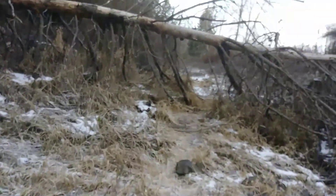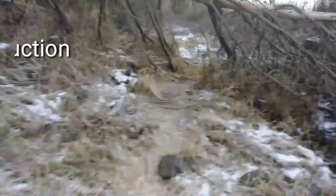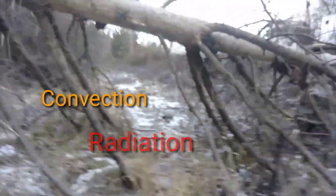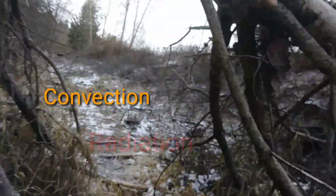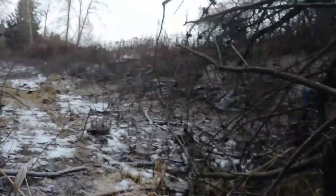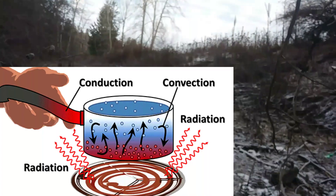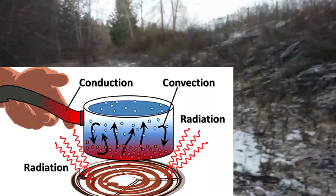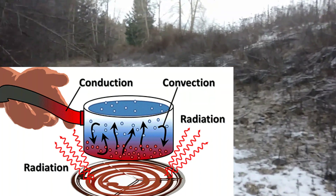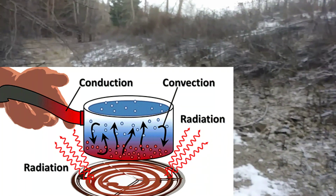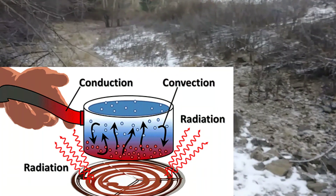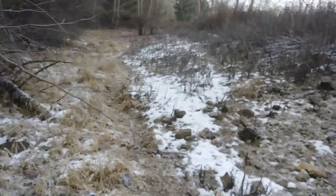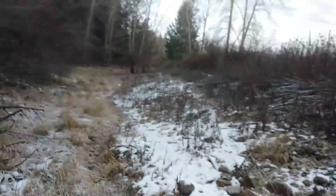Heat energy is transferred in three different ways: conduction, convection, and radiation. Conduction occurs when heat is transferred directly between two particles. A good example of this is your pan on your stove — the stove heats the bottom of the pan and the molecules inside the pan transfer the heat from the bottom into the handle. This is why we insulate the handles of our pans so that the heat energy in the handle doesn't get conducted into our flesh.